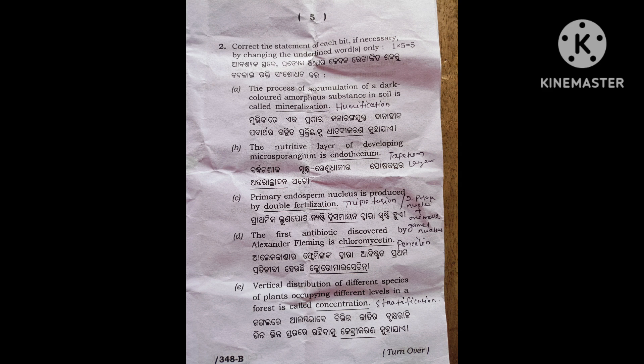The first antibiotic discovered by Alexander Fleming is penicillin — not chloromycetine, the answer is penicillin. Vertical distribution of different species of plants occupying different levels in a forest is called stratification. The answer is stratification.